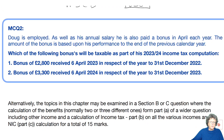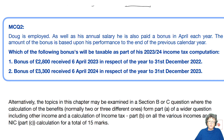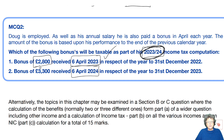Multiple choice question two: Doug is employed and, as well as his annual salary, he is also paid a bonus each year. The amount of the bonus is based on his performance to the end of the previous calendar year. Which of the following bonuses will be taxed in 2023/24? One was received 6th April 2023, one 6th April 2024. The one falling in that tax year is the one received 6th April 2023 — so that bonus goes into his income tax computation. Use your common sense with that.